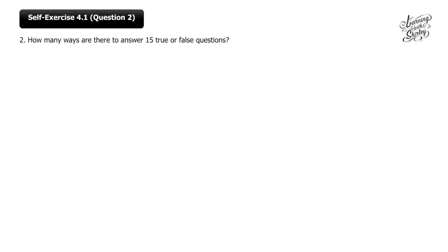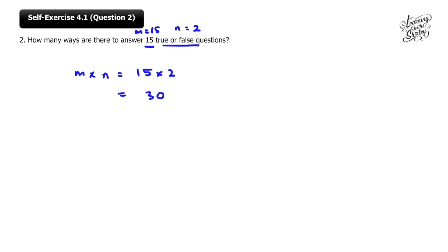Let's look at question number 2. How many ways are there to answer 15 true or false questions? Here, M is 15 and true or false gives two ways, so N equals 2. According to the multiplication rule, M times N equals 15 times 2, which is 30 ways. That is the answer.